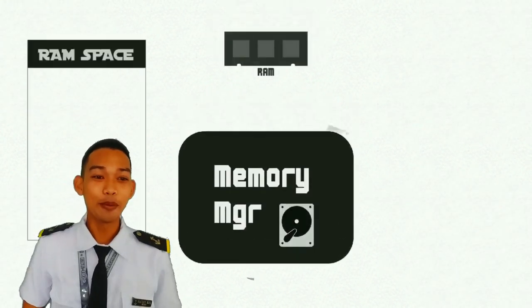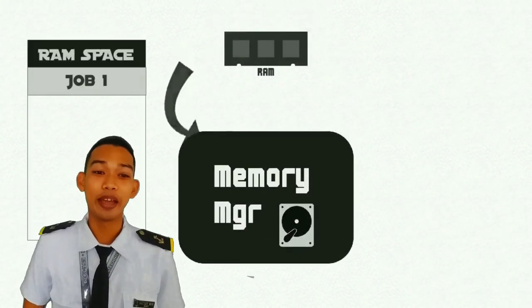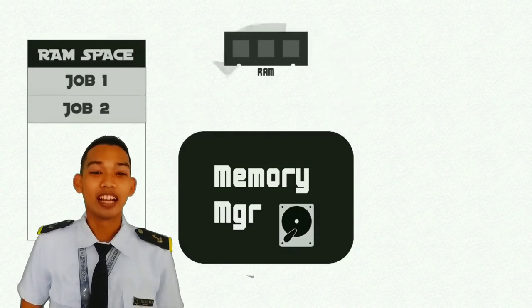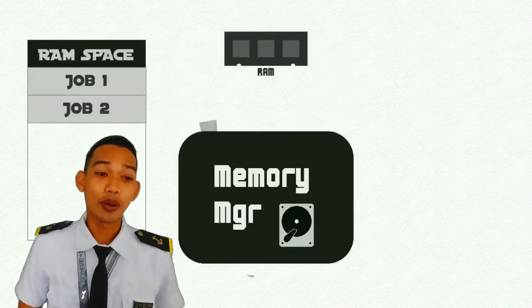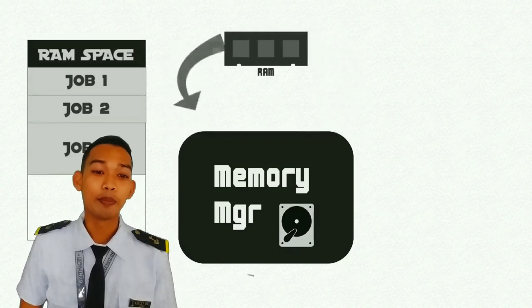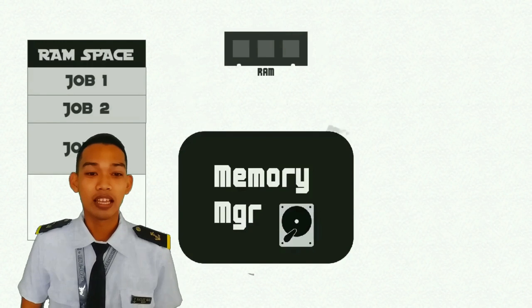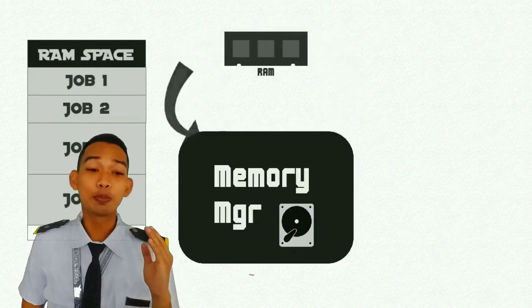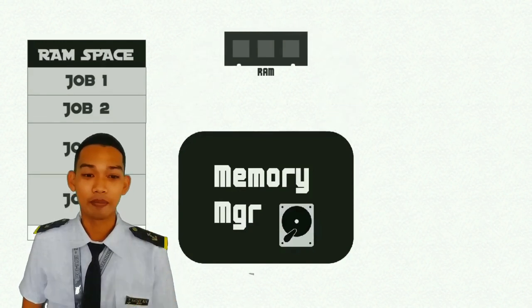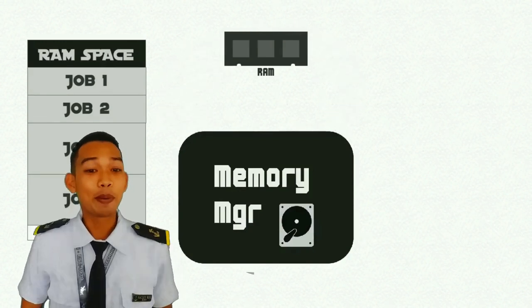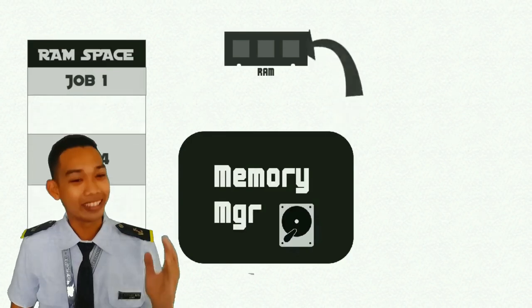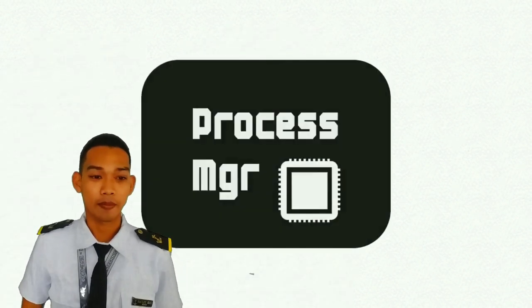The memory manager is in charge of the main memory. It scans every request for memory space to check if it is valid. It allows allocation of memory spaces that are not already taken up. Memory spaces may also need to be de-allocated to free space for others' requests.